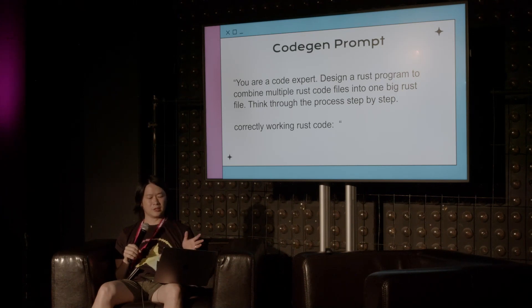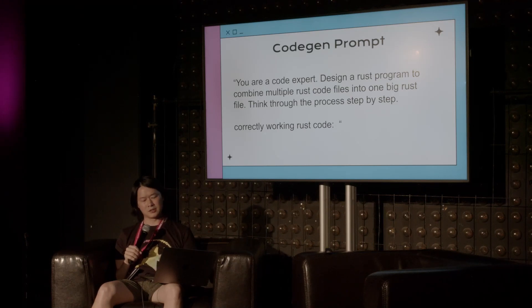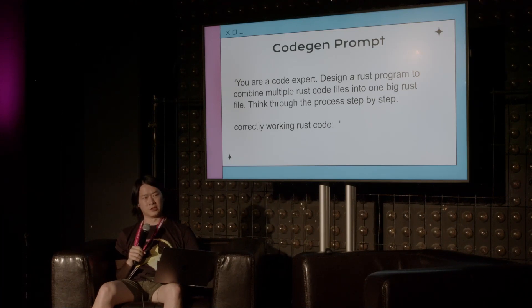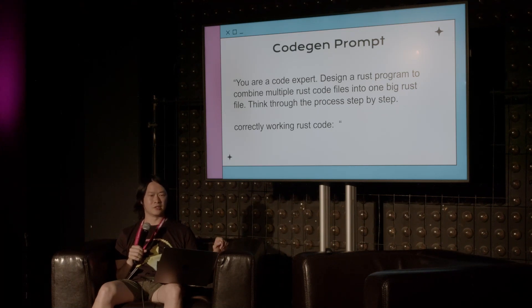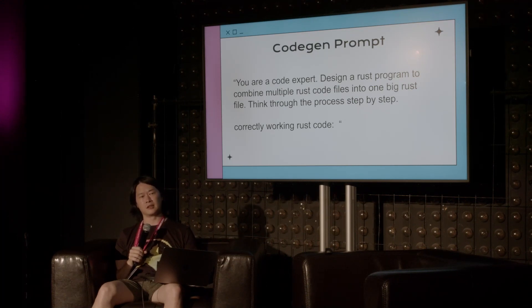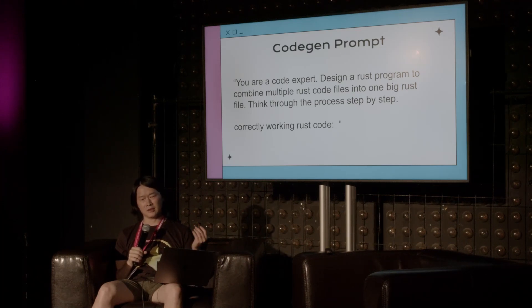If you just ask GPT to design a Rust program with some requirements, you get an average answer. There are a few things you can do to improve performance. Number one is role-playing — prompt it to answer as if it were a coding expert. And if you use the magic phrase 'think through the process step by step,' it ends up using a lot more inference time to answer. Inference time often has a direct relationship with the quality of the code output.